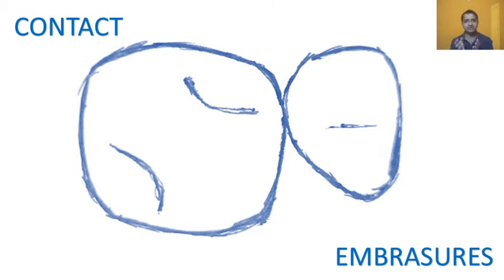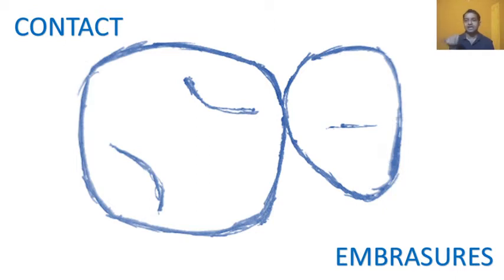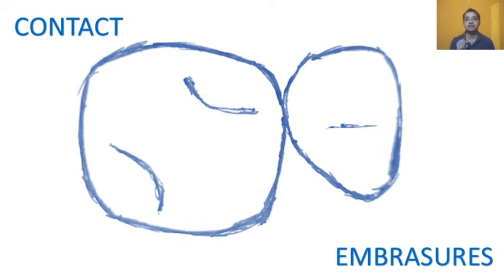We all know the contact is the area where two teeth come in closest approach. The triangular areas created on both sides of the contact are called embrasures. You have four embrasures: buccal, lingual, occlusal, and gingival. Class 2 cavity preparation considers both the occlusal-gingival and buccolingual contacts. For today's lecture, the two key terminologies to understand are contact and embrasures.